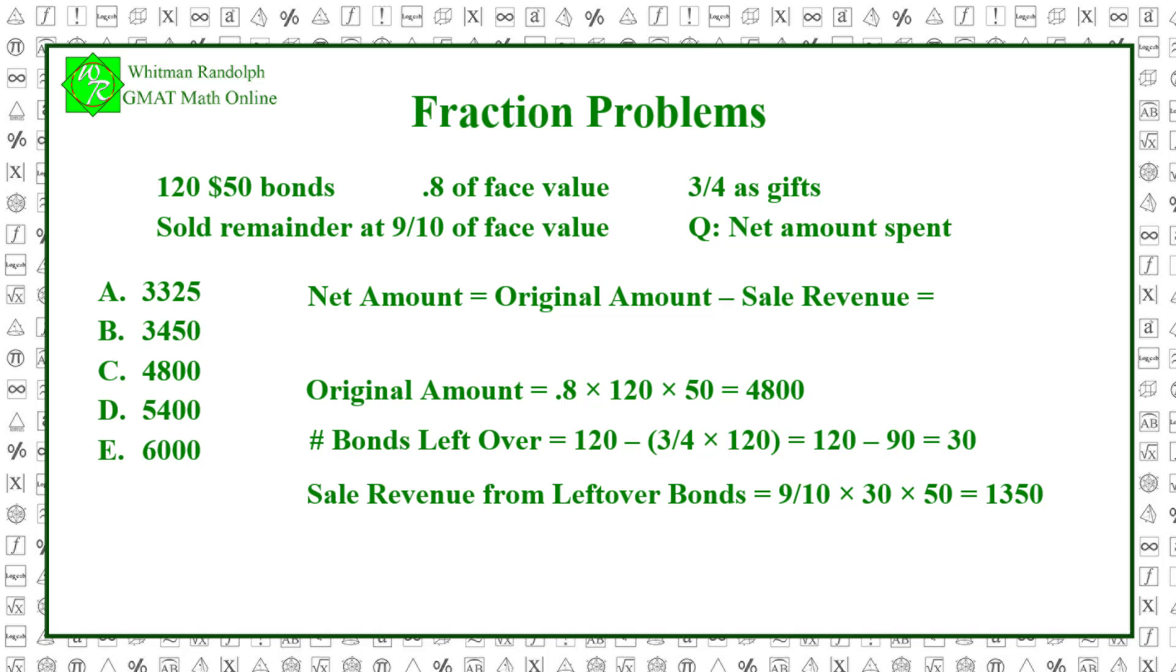Finally, we calculate the net amount by subtracting the sale revenue from the original amount she spent. Net amount equals original amount minus sale revenue, which equals 4800 minus 1350, and that equals 3450. So, the correct answer is B.